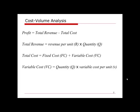Total revenue is the quantity sold times the revenue per unit. Total cost includes fixed cost and variable cost. Variable cost can be calculated as the quantity times the variable cost per unit. These are the basic equations and relationships we use to do cost-volume analysis.